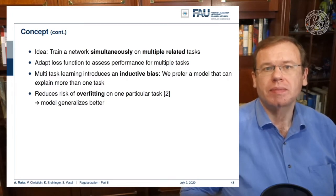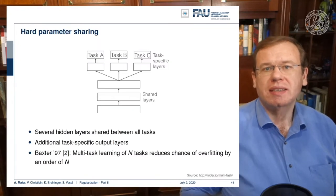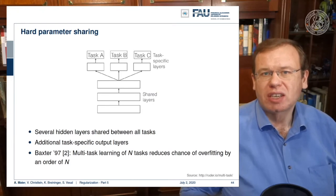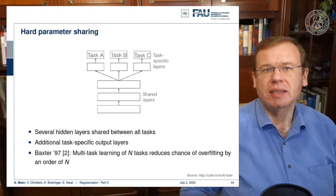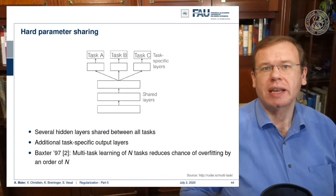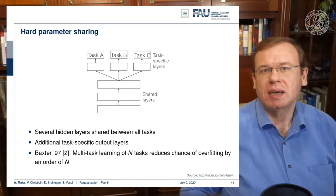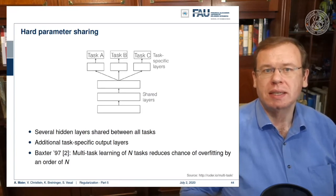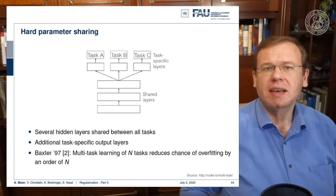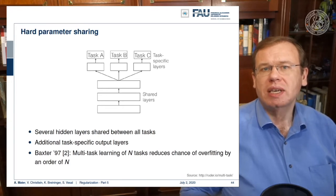Let's look at the setup. We have some shared input layers — these are the feature extraction or representation layers. Then at some point we split into task-specific layers to evaluate on task A, task B, and task C. These tasks may be very different but somehow related, because otherwise it wouldn't make sense to share the previous layers.